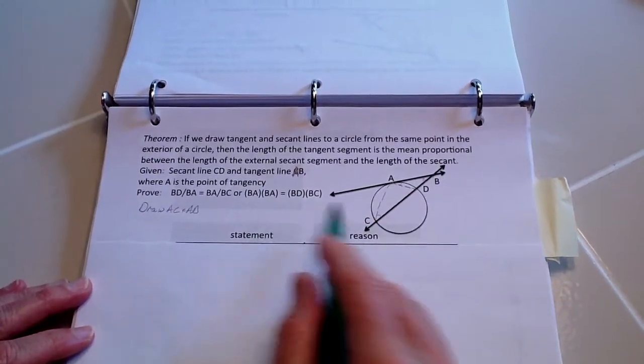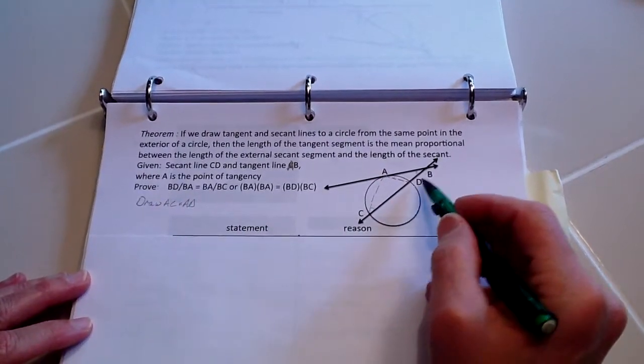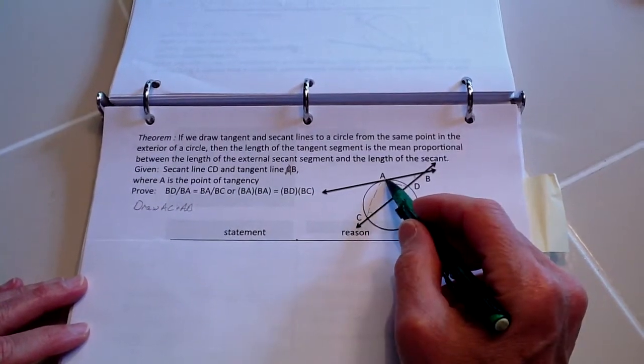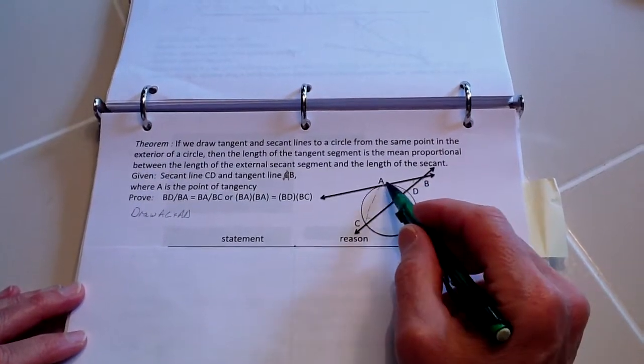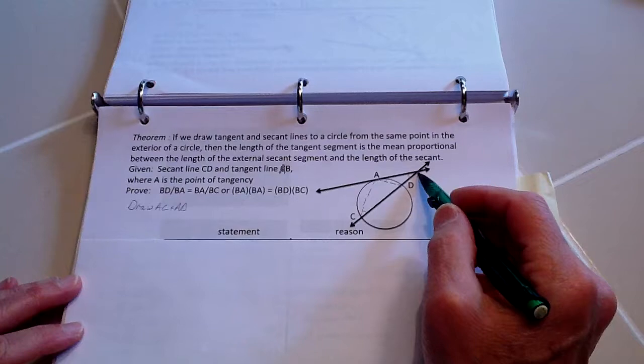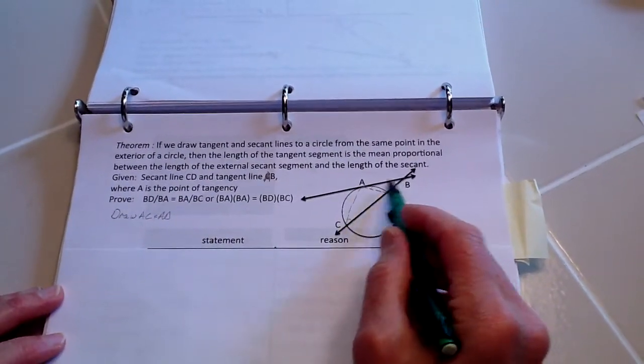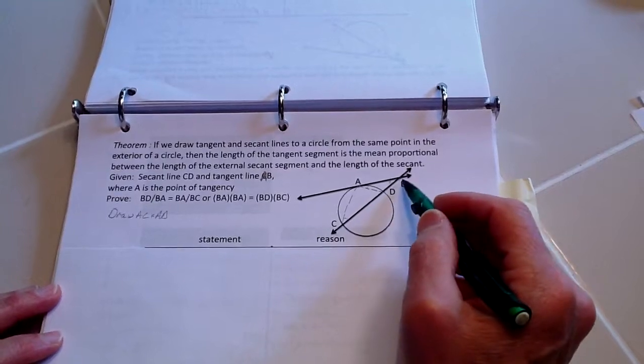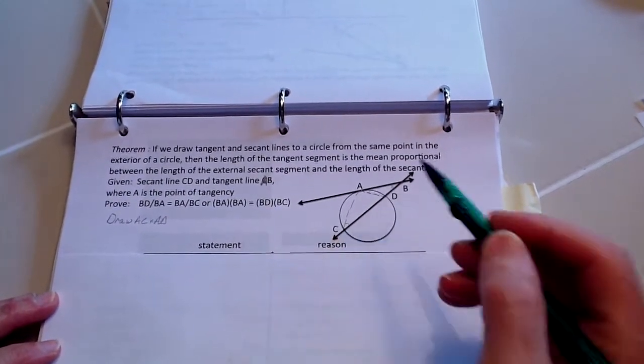But essentially what that is saying is that BD over BA is going to be equal to BA over BC. Or when you cross multiply, you've got BA times BA is equal to BD times BC.